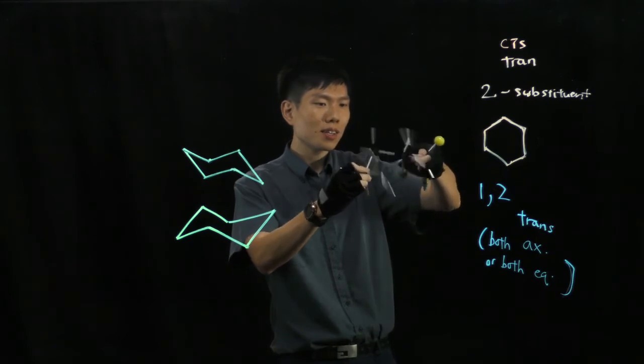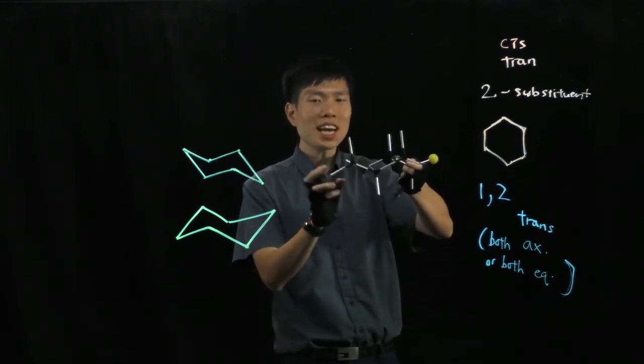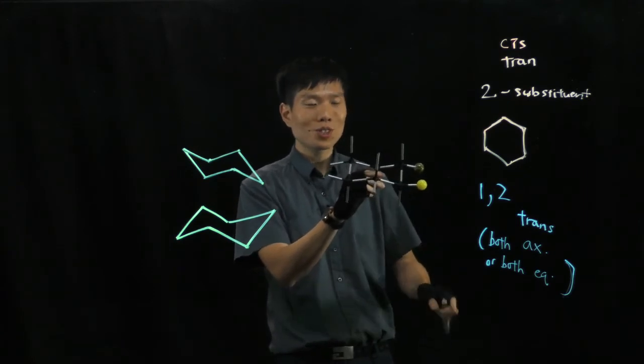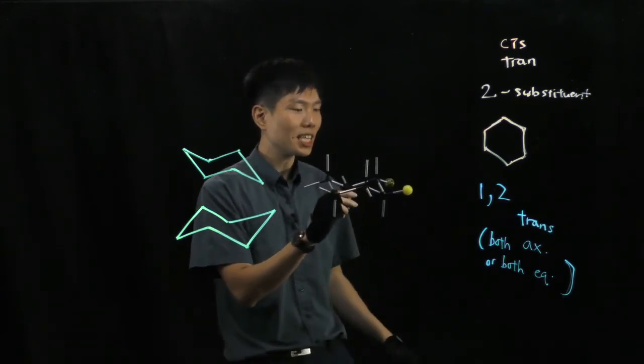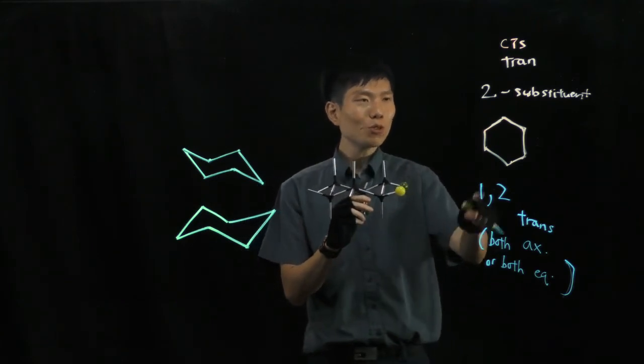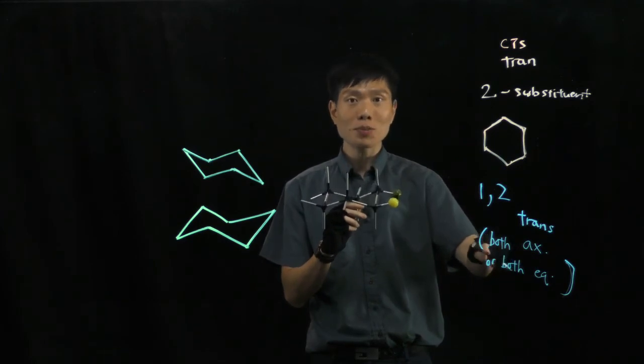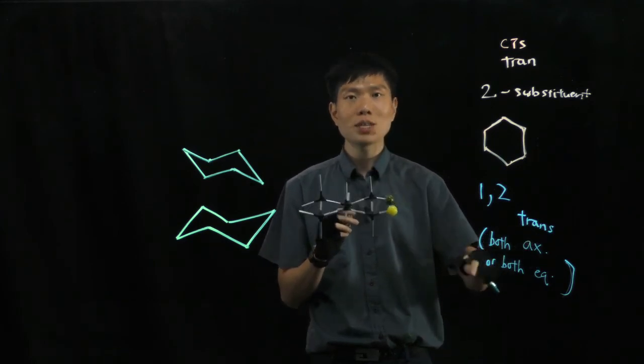But if I do a ring flip, now both bulky groups are pointing to the side. They are now equatorial, so they do not experience any 1,3 diaxial interaction. But just so you know that for 1,2 disubstitution, if it's trans, either both must be axial or both must be equatorial.